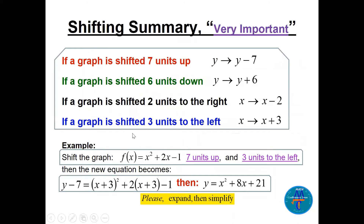Shifting summary: up and down are related to y; right and left are related to x. If the graph shifts seven units up, replace y with y − 7. Six units down means replace y with y + 6. Two units to the right means replace x with x − 2. Three units to the left means replace x with x + 3.